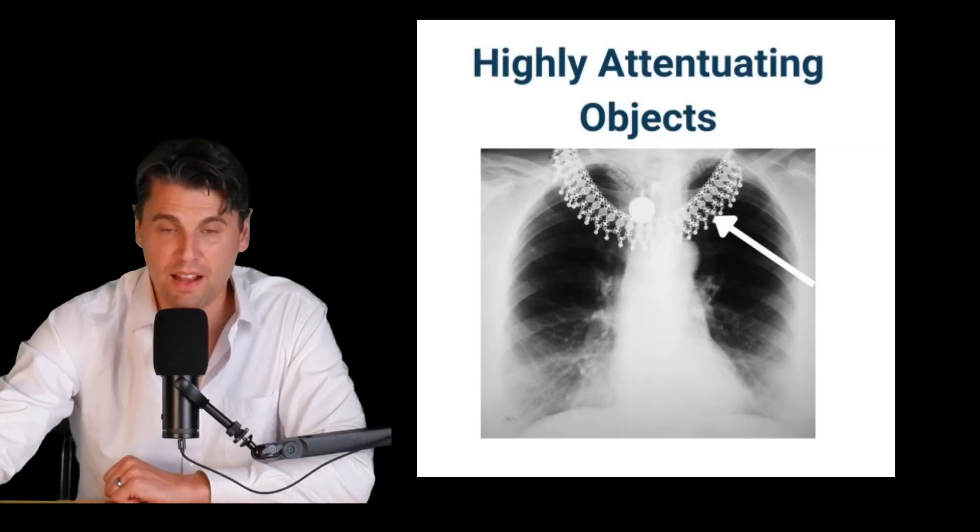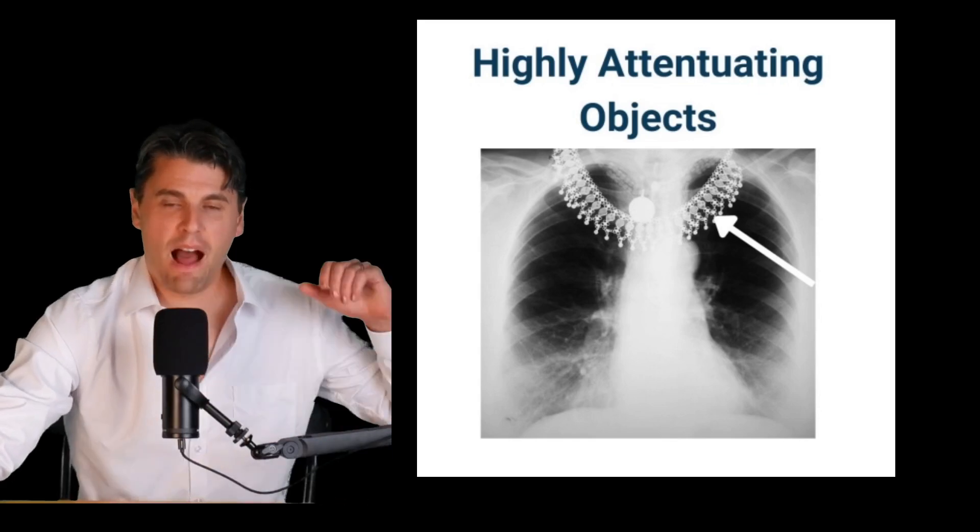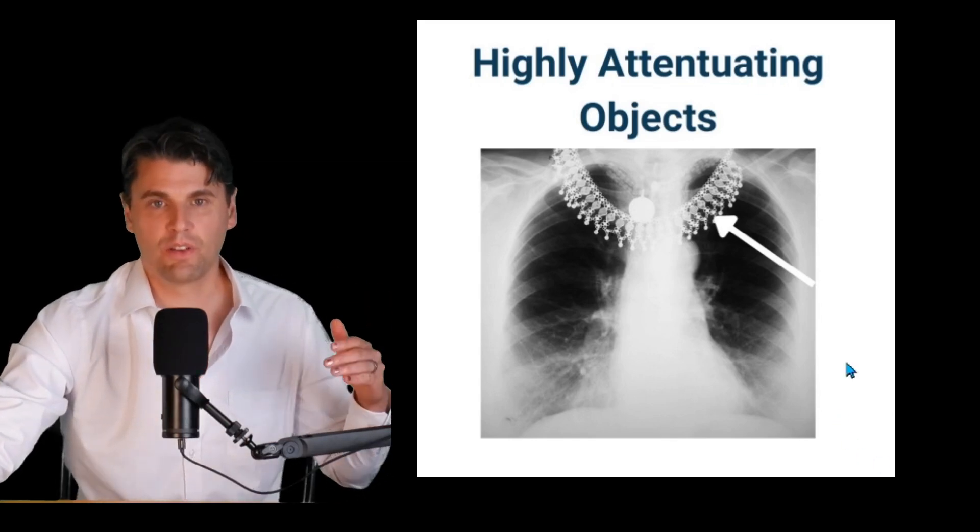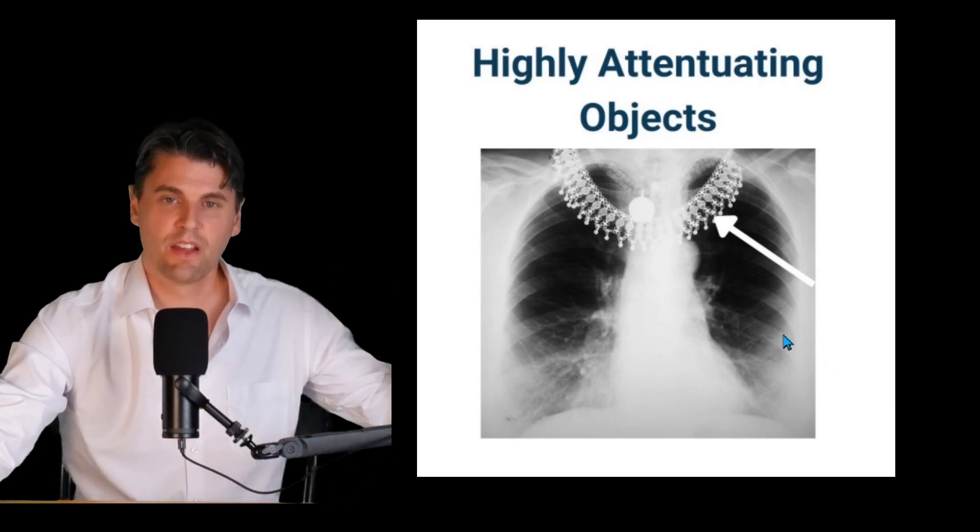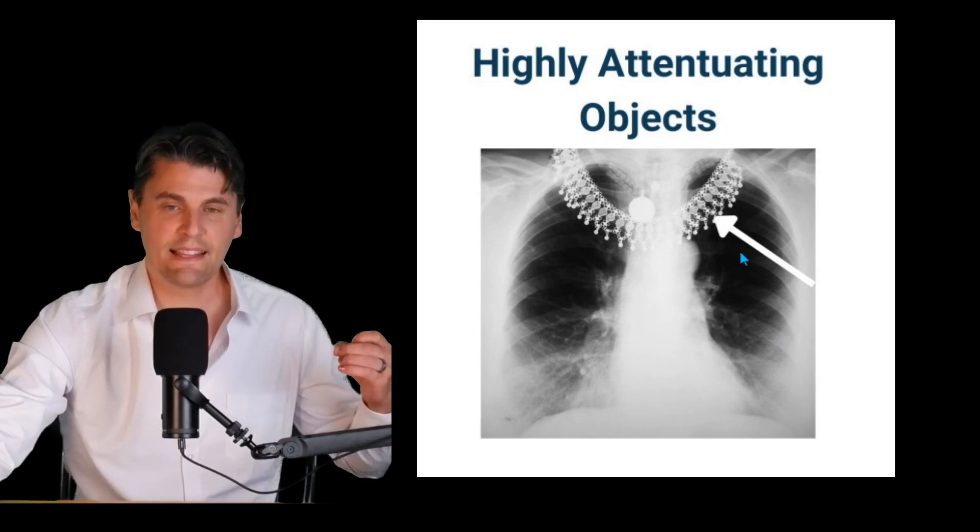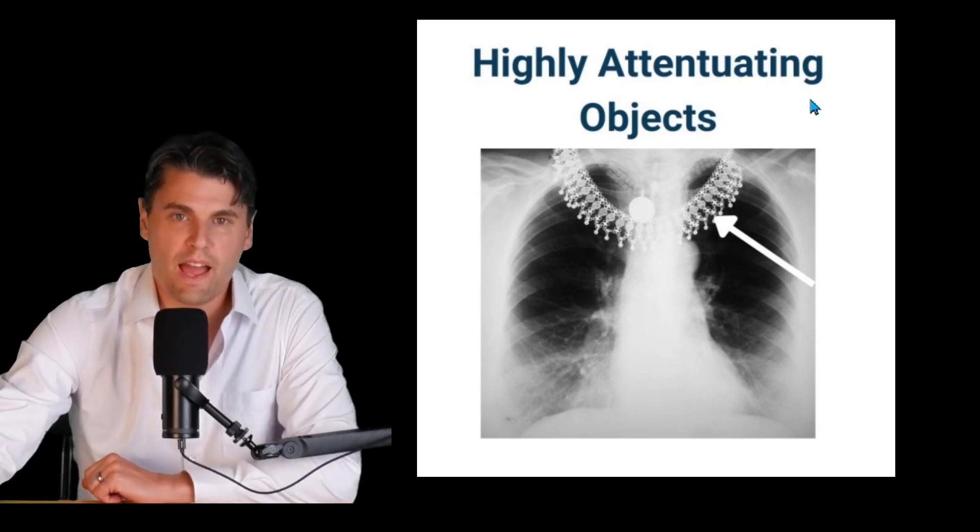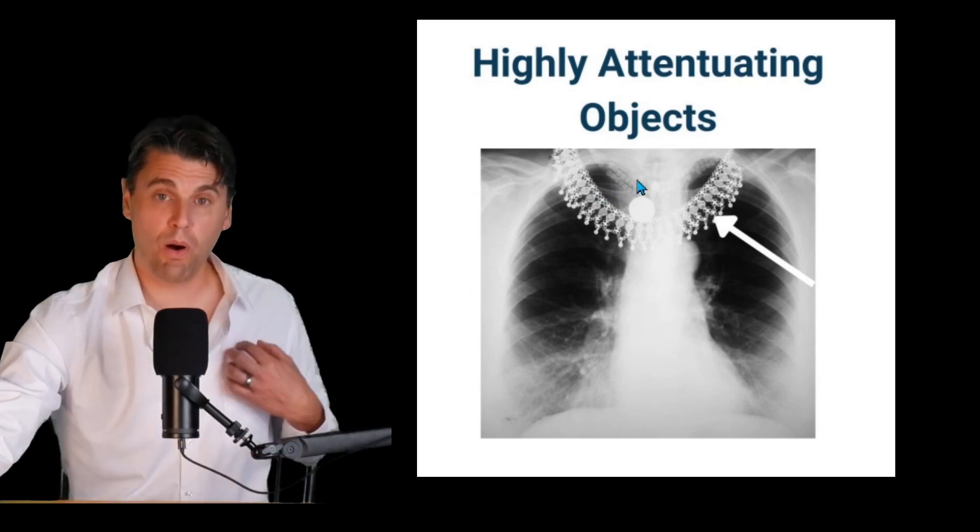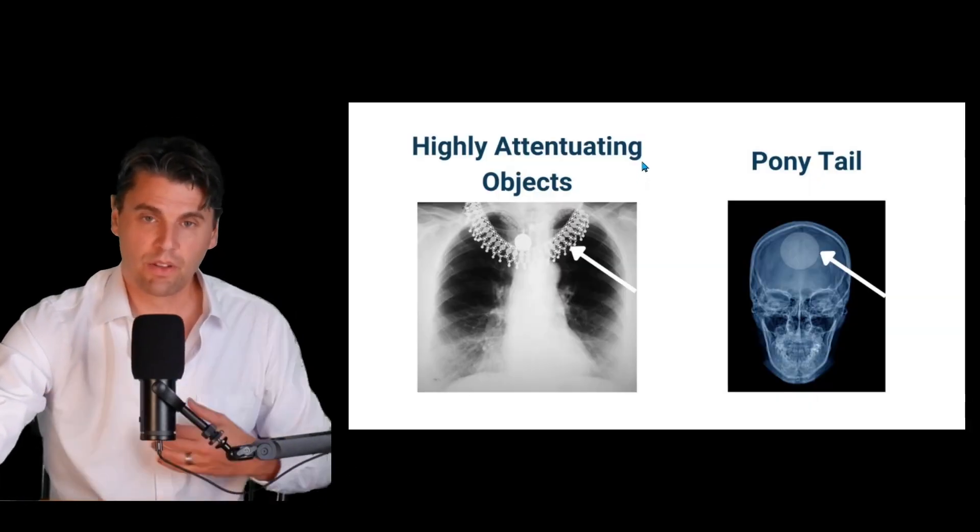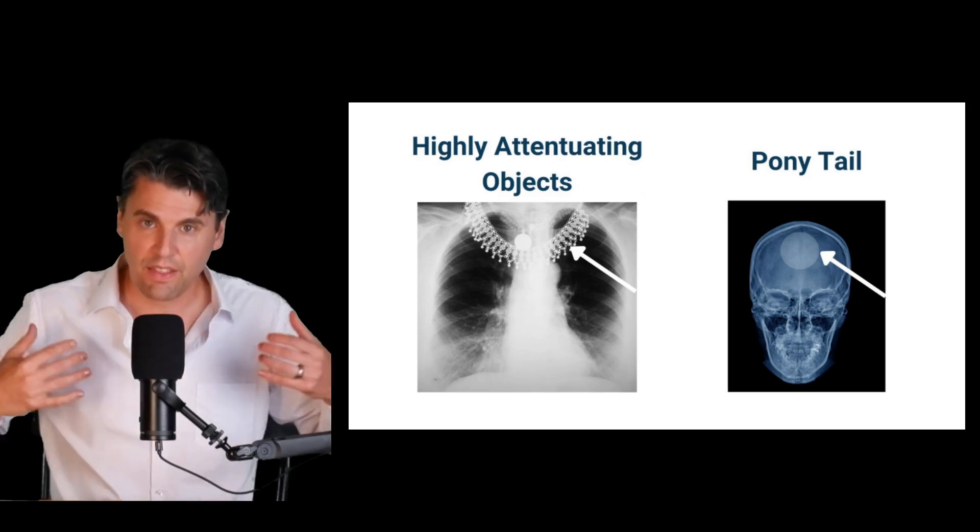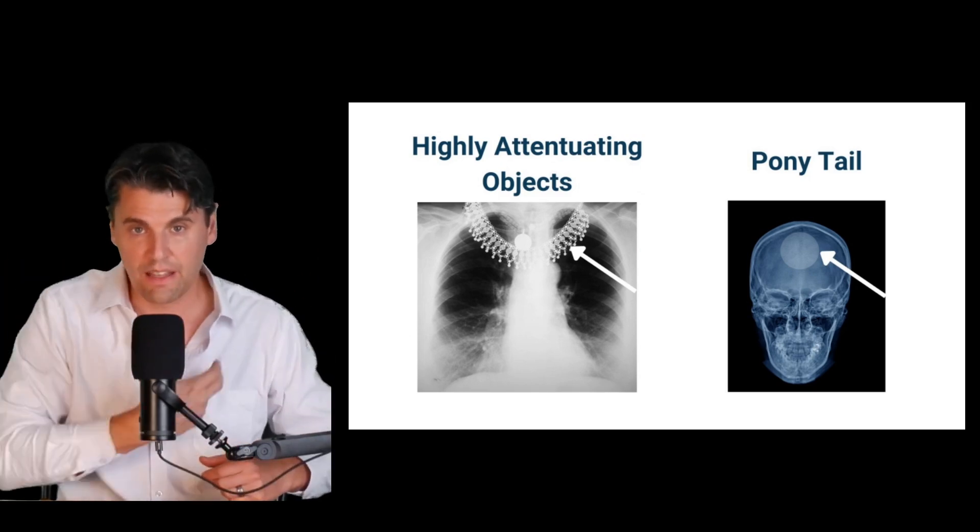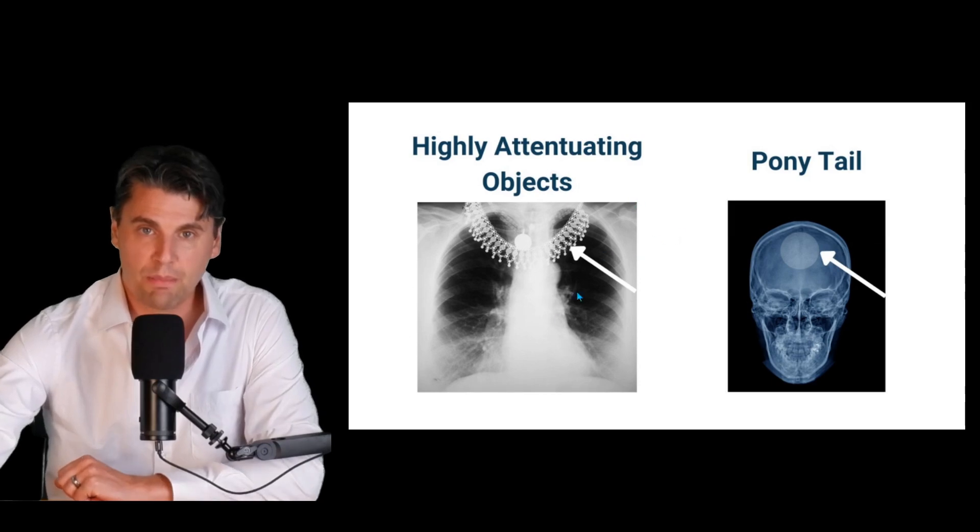Another type of artifact we can have is from highly attenuating objects. If the patient is still wearing jewelry, necklace, things that are highly attenuating, those actually will superimpose on the image because what you're going to see on the image is just the projection of everything that's in that direction.